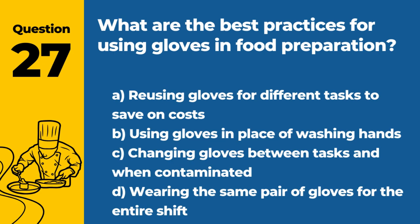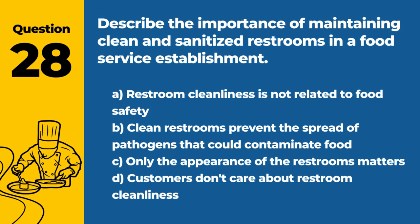Question 27. What are the best practices for using gloves in food preparation? The answer is C: Changing gloves between tasks and when contaminated. Proper glove use prevents cross-contamination and maintains food safety.